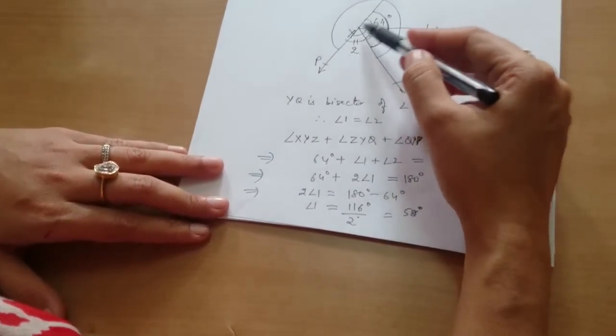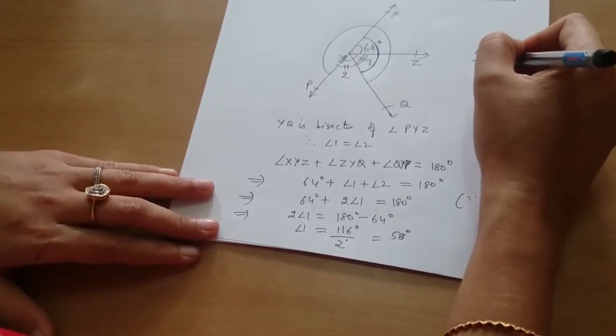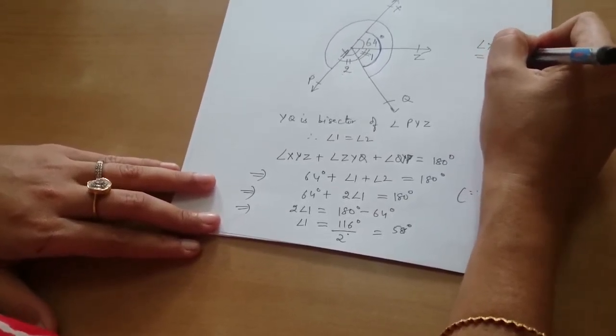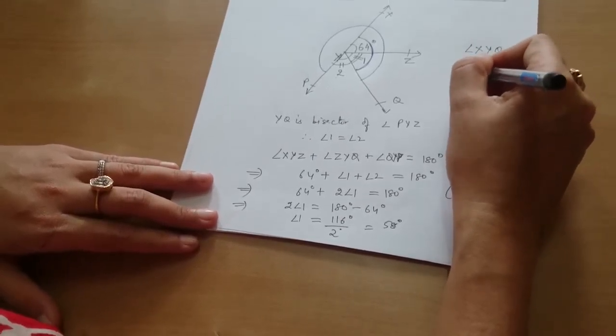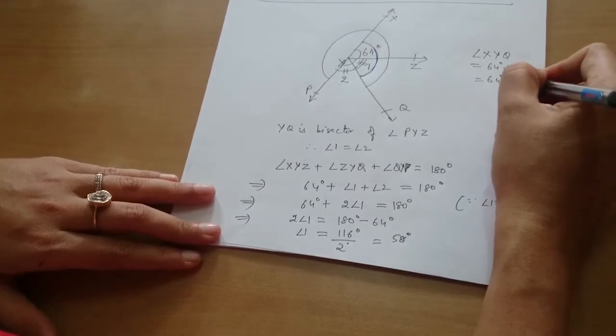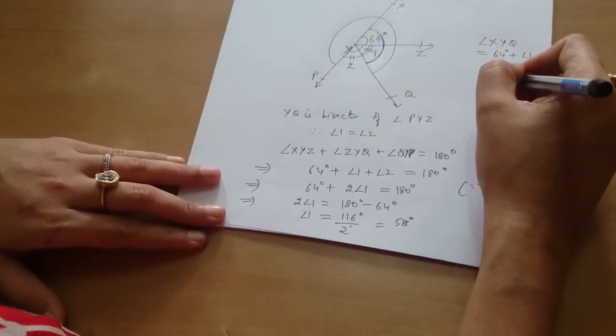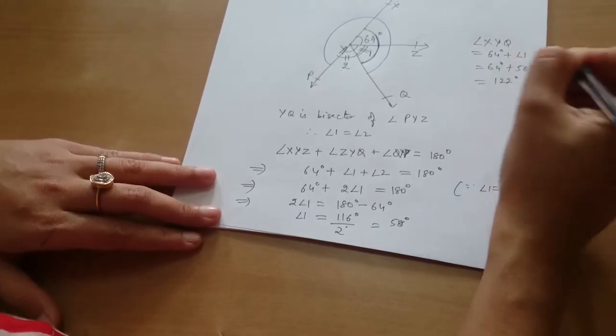Now we have to find angle XYQ. Angle XYQ is equal to 64 degrees plus angle 1. That is 64 degrees plus 58 degrees. What is the answer? 122 degrees. Yes.